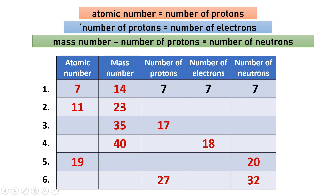For number two, the atomic number is 11 and the mass number is 23. Since the atomic number equals the number of protons, number two has 11 protons. The number of electrons is also 11 since the atom is neutral. To get the number of neutrons: mass number 23 minus number of protons 11 gives us 12 neutrons.